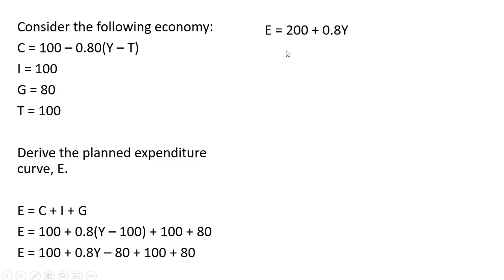We'll go ahead and graph this. You'll note though that the vertical intercept is going to be 200, and the slope of this graph will be 0.8.